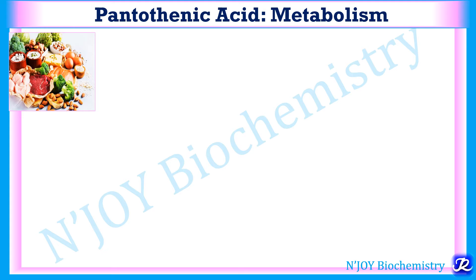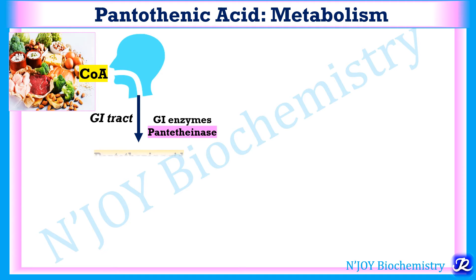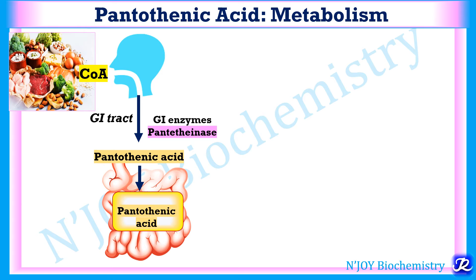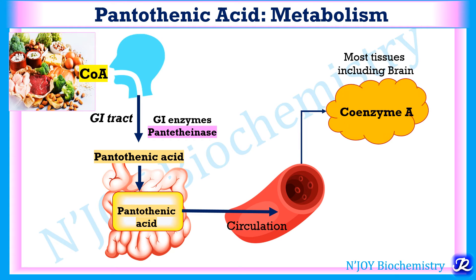Pantothenic acid is present in food sources in the form of coenzyme A. Once food containing pantothenic acid is ingested, the enzyme pantothenase in the gastrointestinal tract breaks down coenzyme A to release free pantothenic acid. This is absorbed in the intestinal cell and circulated to various target tissues, where it is again converted into coenzyme A — a process that occurs in most tissues including the brain.